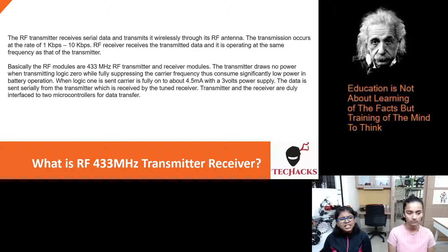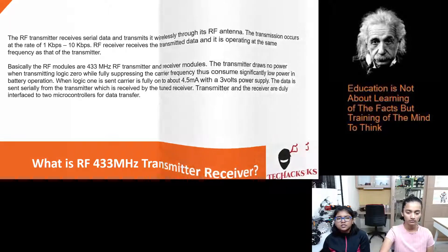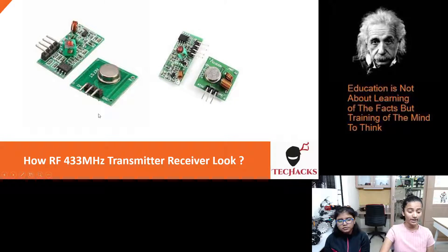The data is sent serially from the transmitter which is received by the tuned receiver. The transmitter and the receiver are duly interfaced to microcontrollers for data transfer. So this is how our RF 433 MHz transmitter and receiver look like.